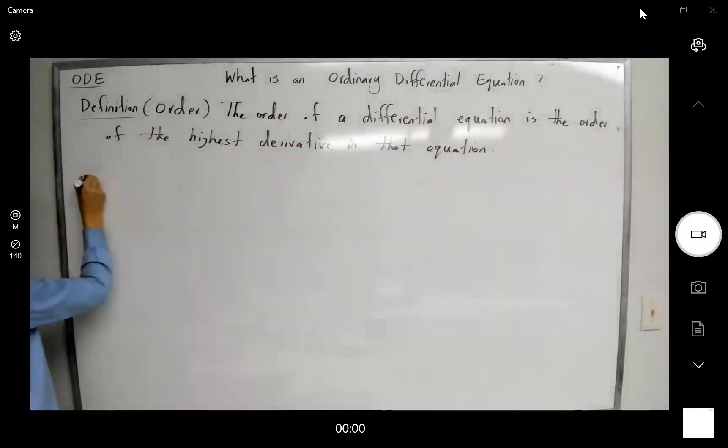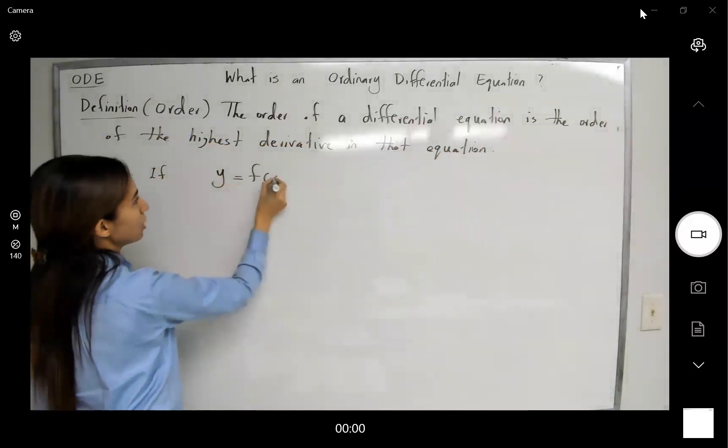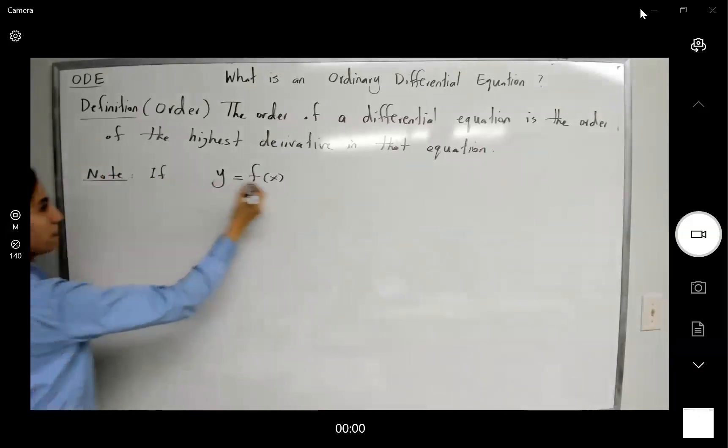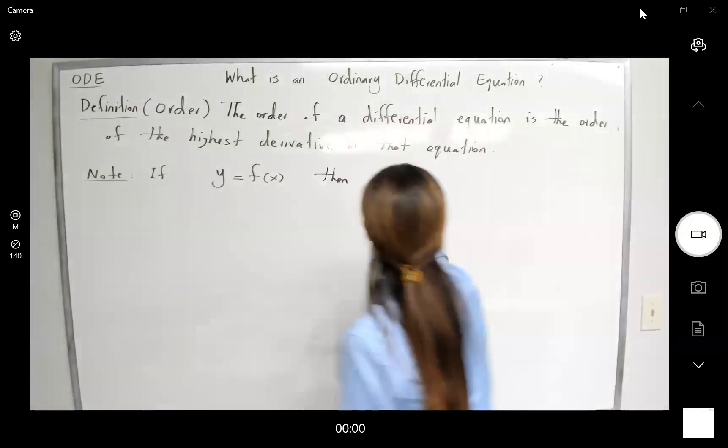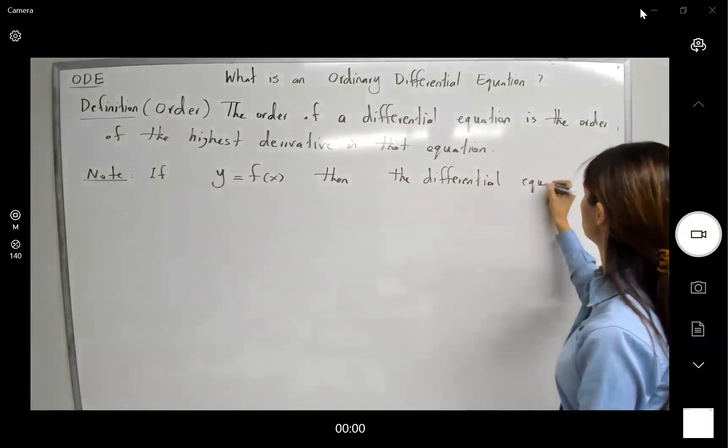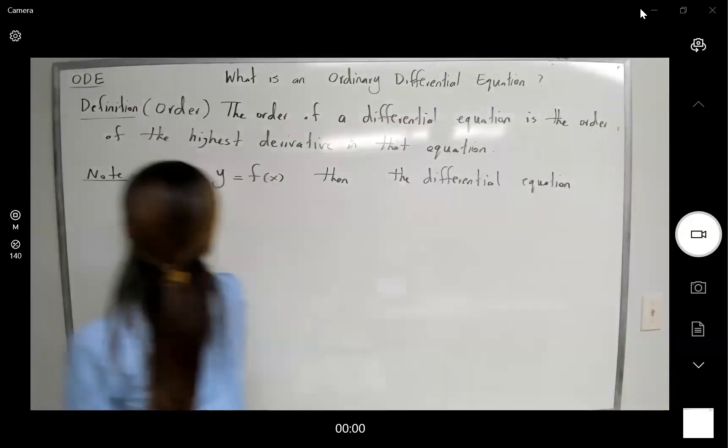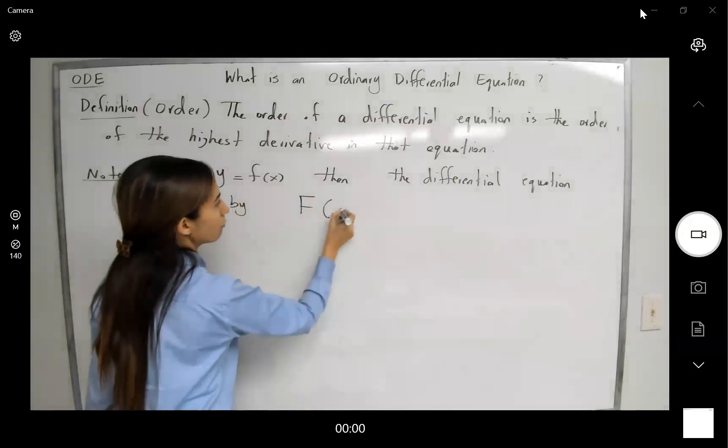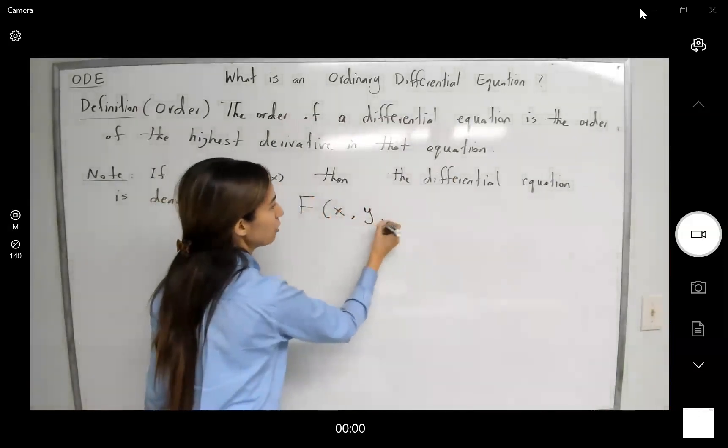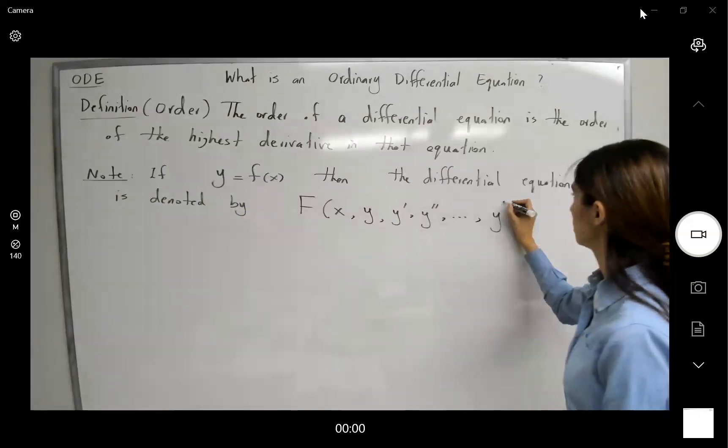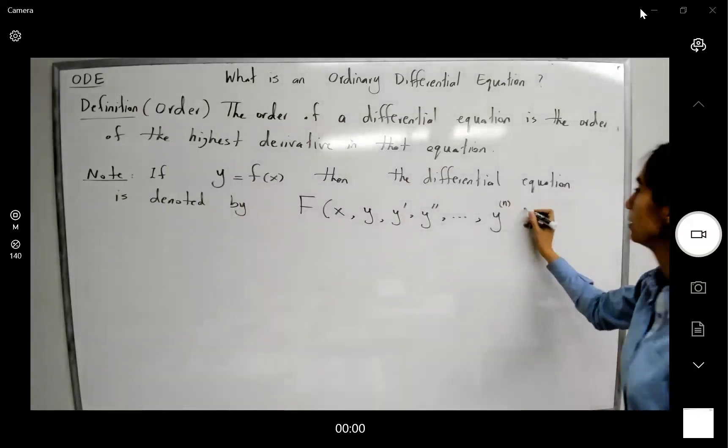Note that in general, if y is a function of x, then we denote the differential equation this way. The differential equation is denoted by f of independent variable x, function y, and its derivatives. And let us include the nth derivative of the function as well.